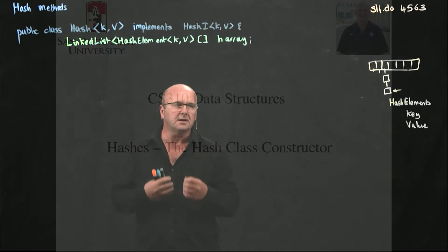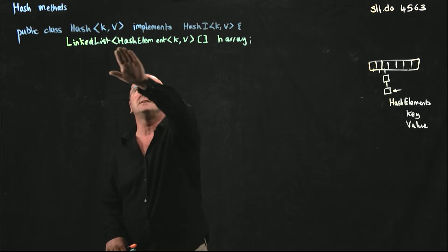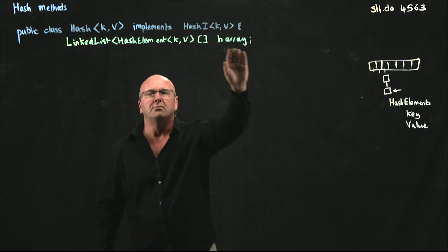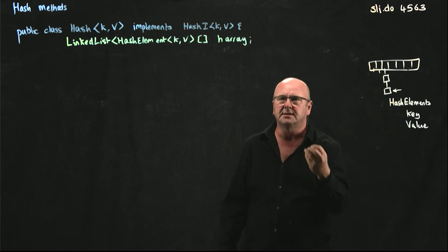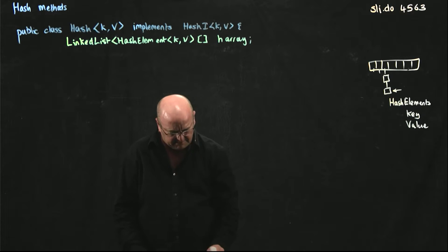So we've seen our inner class, our hash element that we're going to use, and we've defined our linked list array, which is an array of linked lists. That's the thing that's doing all the work for us. That's our hash.